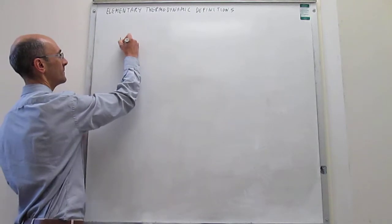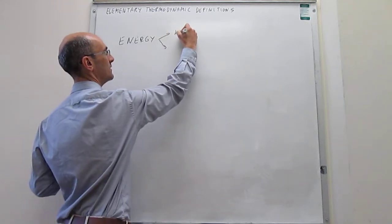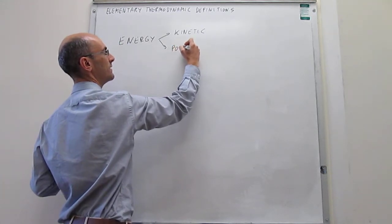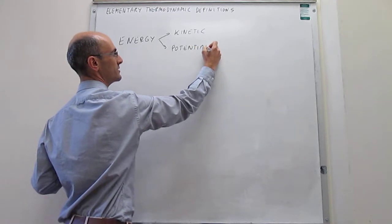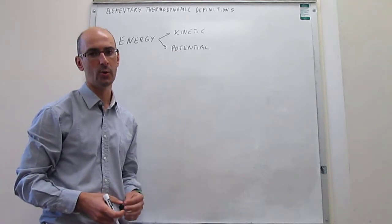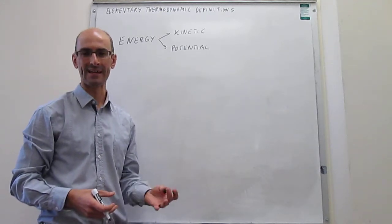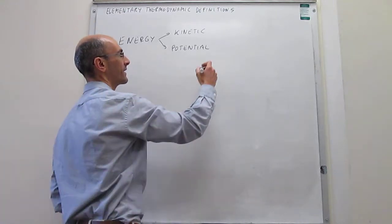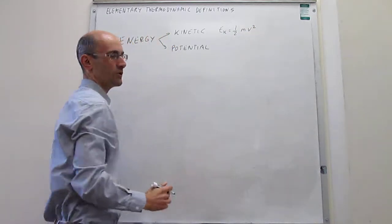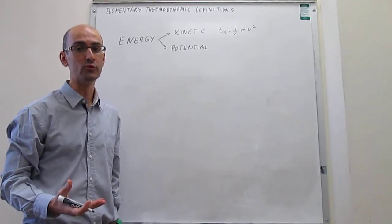There are two types of energy in general: kinetic and potential. Kinetic energy is due to motion and potential energy is due to position or composition. Kinetic energy is simple to define from a microscopic, classical perspective — not a quantum mechanical way — and is always one-half mass times velocity squared. You can clearly see from that expression that this type of energy is due to motion.